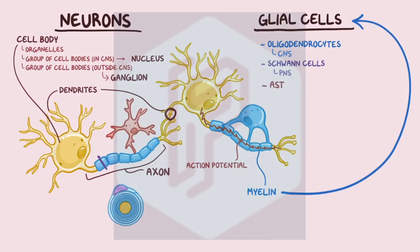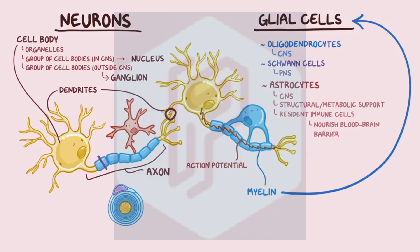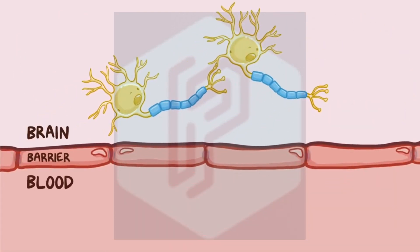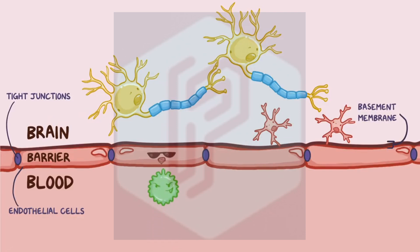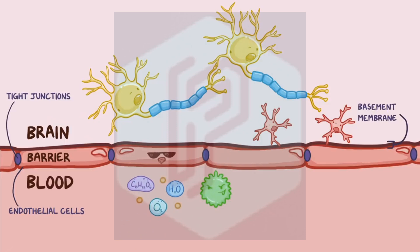Another type of glial cell is called astrocytes, and they're only present in the central nervous system. Astrocytes give structural and metabolic support to neurons, act as resident immune cells, and help seal and nourish the blood-brain barrier. The blood-brain barrier consists of tight junctions that connect endothelial cells lining the capillaries in the brain. Think of the blood-brain barrier as the brain's bouncer — a highly selective membrane that turns away bacteria and other large, shady-looking molecules, while letting in nutrients like water, oxygen, glucose, and smaller fat-soluble molecules.